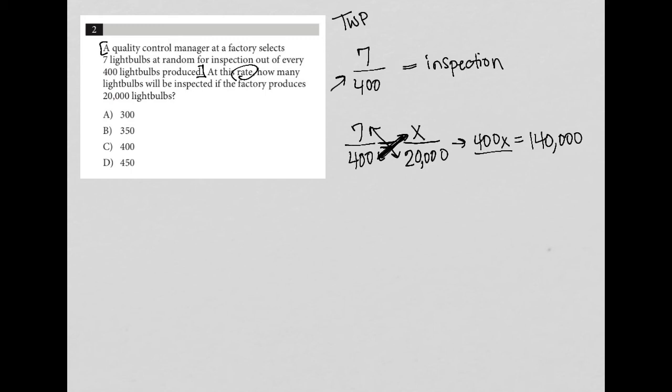And then I'm solving for X, so I can divide both sides by 400. So you have a calculator, so you would be able to do this with your calculator. I'll just do it by hand here for those who don't have a calculator.